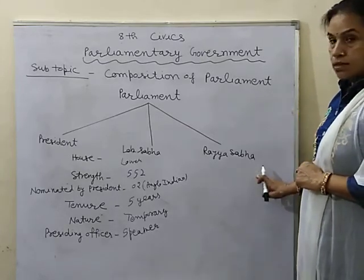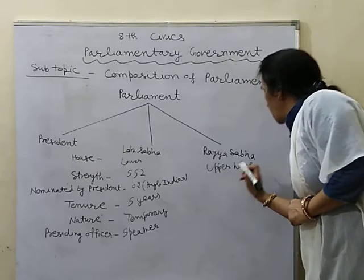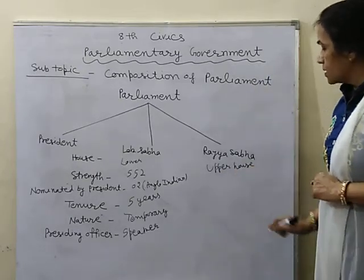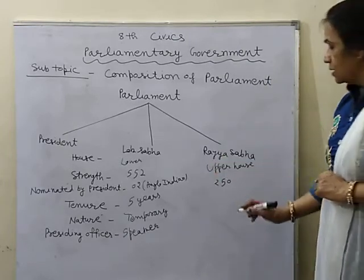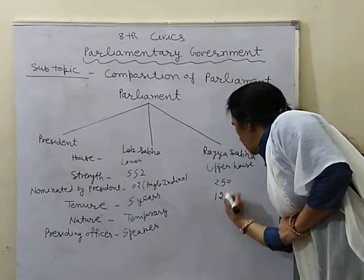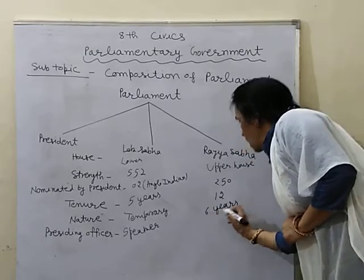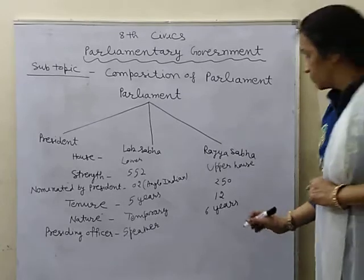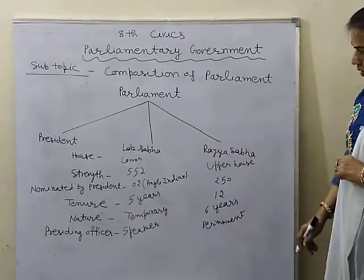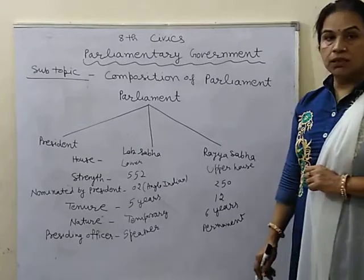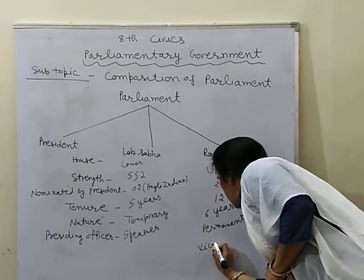Now let's talk about Rajya Sabha. This is the upper house of Parliament. Its maximum strength is 250. And 12 members are nominated by the President. Its tenure is 6 years. Its nature — it is the permanent house. It cannot be dissolved in between. After every 2 years, one-third of the members retire. And the presiding officer is our Vice President.